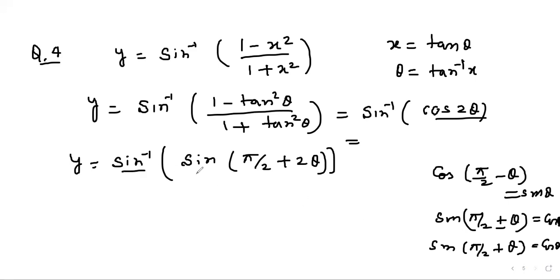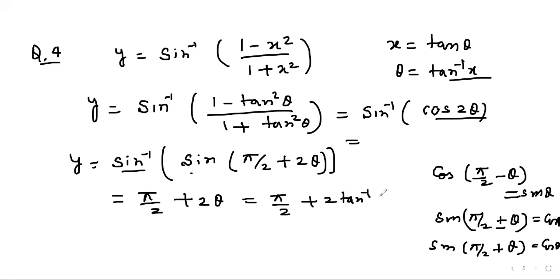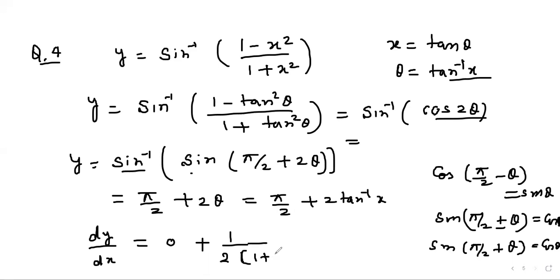Therefore y = sin⁻¹(sin(π/2 − 2θ)) = π/2 − 2θ, or equivalently π/2 + 2θ depending on the sign chosen. With θ = tan⁻¹ x, we get y = π/2 + 2 tan⁻¹ x. Differentiating, dy/dx = 0 + 2/(1 + x²) = 2/(1 + x²).